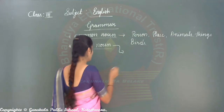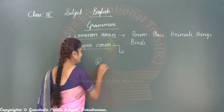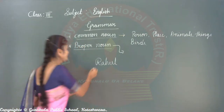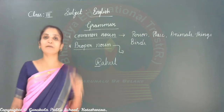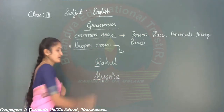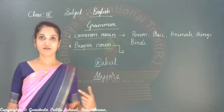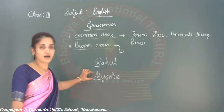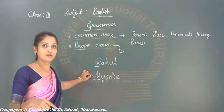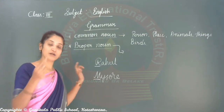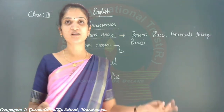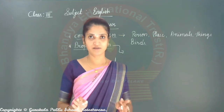For example, you learned in previous class, if it is a person's name, like Rahul — that is a particular name, one person's name. The beginning letter we must write in capital. If it is a place, like Mysore — the beginning letter of this place is capital. We can't call this name to another place. Is it possible to call Bangalore as Mysore? No — Mangalore, Mysore, Bangalore are all different particular names of those places.